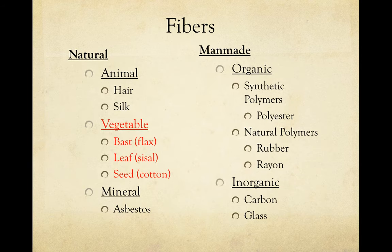The next category of natural fibers are the vegetable fibers. These come from plants and are organized by where on the plant they originate from. A bast fiber comes from the bast, which is the outer skin of plant stems. Leaf fibers come from the leaves of plants, like sisal. And seed fiber comes from the seeds of plants — cotton is an example, as it is the fiber surrounding the cotton seeds.